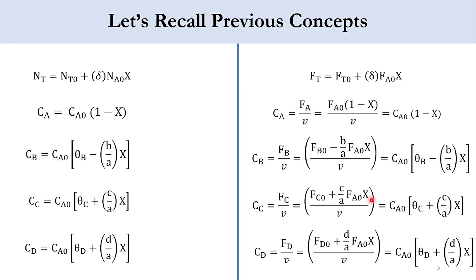Before moving to today's lecture, let's recall our previous concepts. We know that total number of moles is equal to initial number of moles plus sigma times Na0, which is the initial mole of A multiplied by the conversion. Then the concentration of A at the exit of the reactor is equal to Ca0, which is the concentration of A at the inlet, into 1 minus the conversion. For CB, it is Ca0 times (theta_B minus b/a times X).